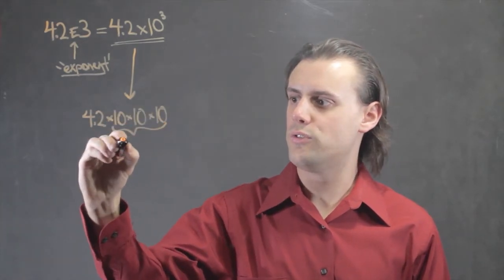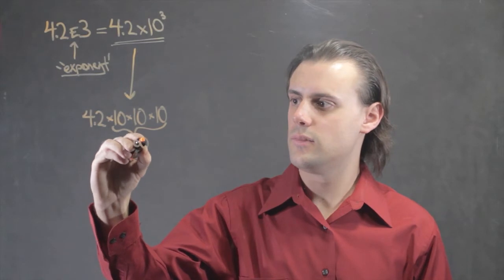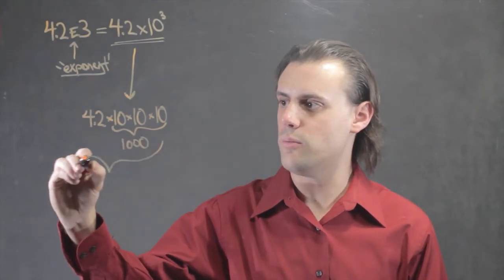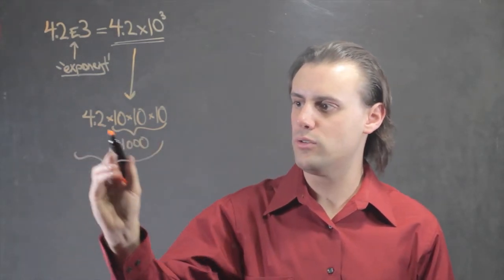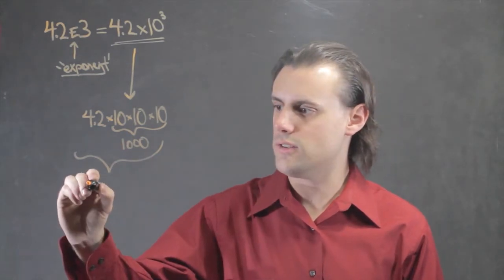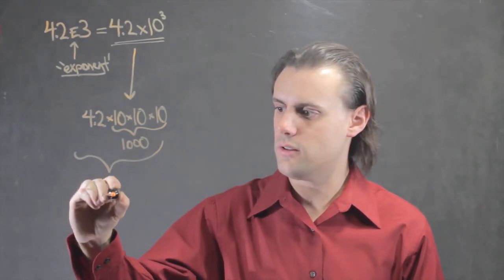This is equal to a thousand, and so the final product will be 4.2 times 1,000, which is equal to 4,200.